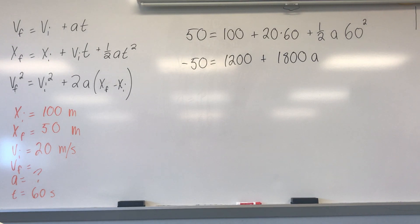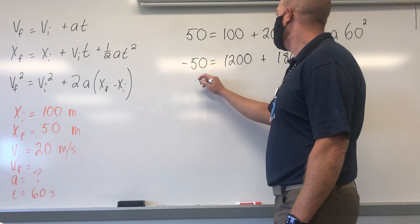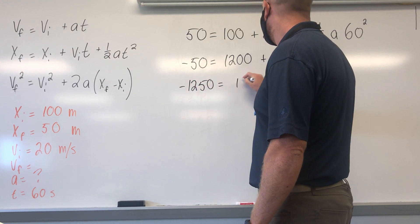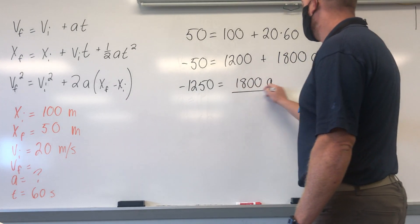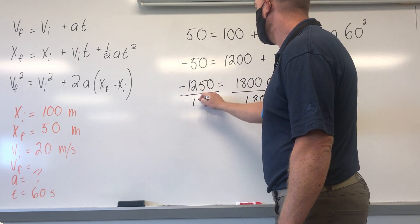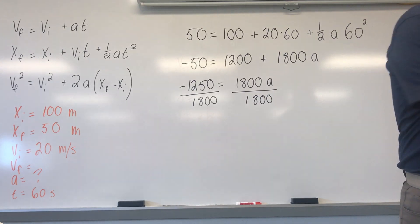Okay. Next step, let's get the 1,200 on this side. So, negative 1,250 equals 1,800 A. Divide both sides by 1,800. That one I can't do in my head.